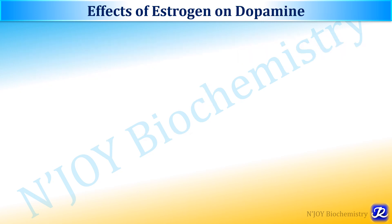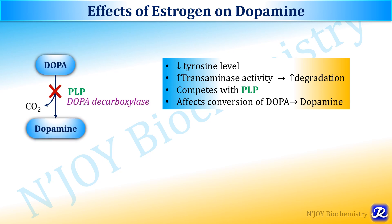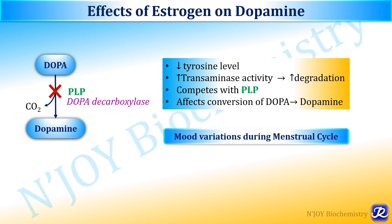Estrogen affects the levels of dopamine. Estrogen decreases the tyrosine level, increases transaminase activity and leads to increased degradation of tyrosine. It also competes with pyridoxal phosphate, which affects the conversion of DOPA to dopamine. These alterations of dopamine level by estrogen are responsible for mood variations during the menstrual cycle.